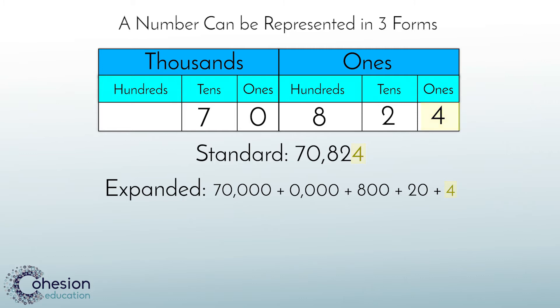The third form we will take a look at is word form. In word form, students simply express the number in words. As you read 70,824, simply write the words instead of the digits. 70,824. Knowledge of periods is really important here as students need to know when to say thousand.